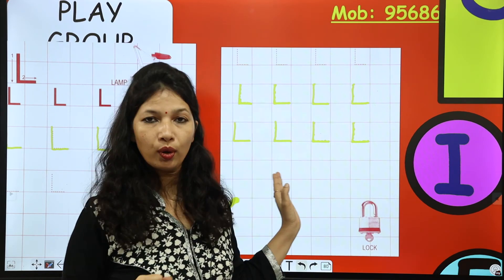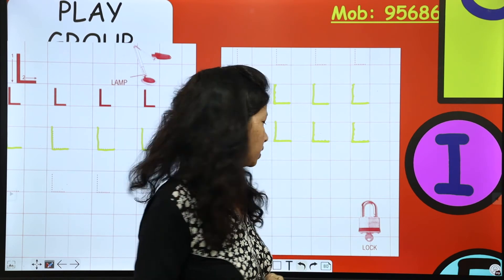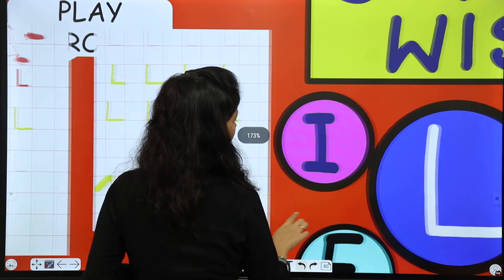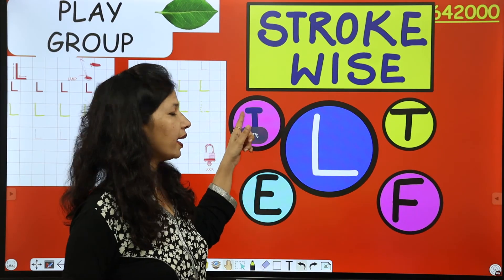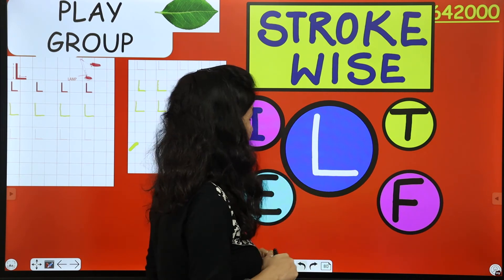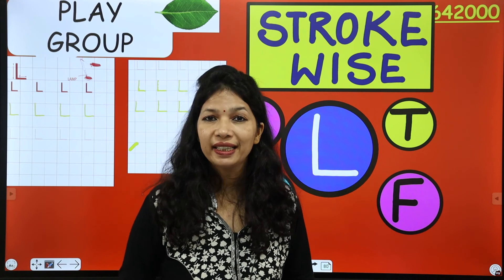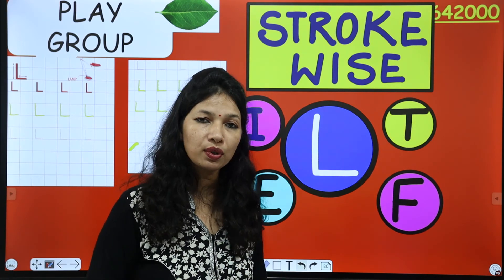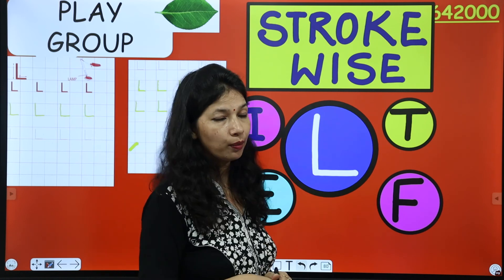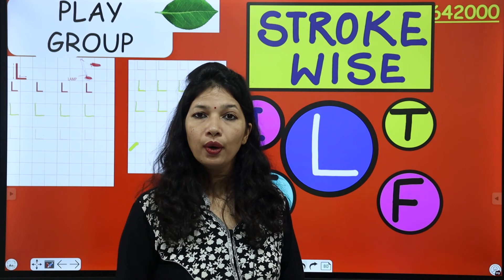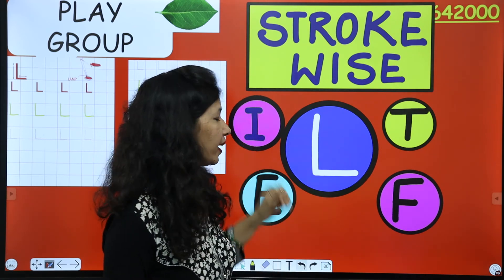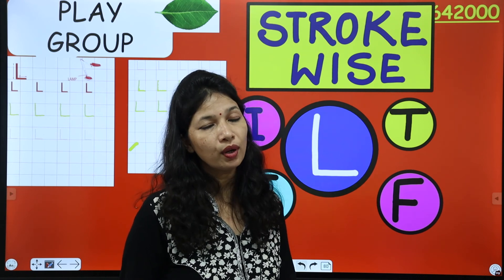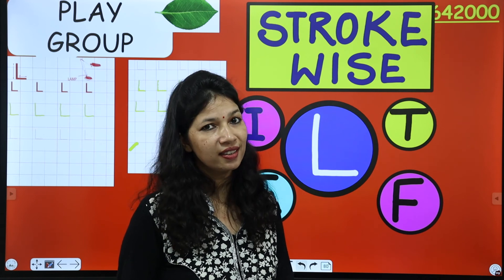So you have to follow the same process. Dono page pe same process aapko follow karna hai. Already humara letter I ho chuka hai, aaj humne letter L kiya hai. And next konsa hoga kids? Letter T. T mein bhi same stroke hai — standing line and sleeping line, it is also very easy. Aap isko jaldi likhna seekh jayenge, but aapko practice toh karna hi hogi. Now you have to practice letter I and letter L in your notebook with the help of your mama — mama aapko tracing karke dengi and aapko likhna hai. Jitna aap practice karoge, utna jaldi likhna seekh jaoge.